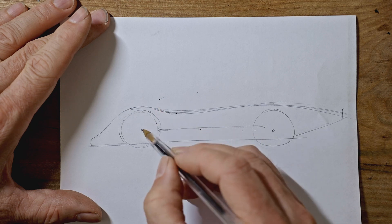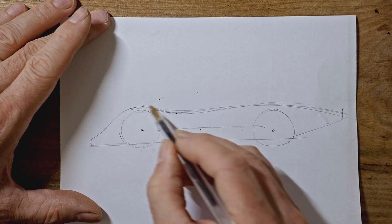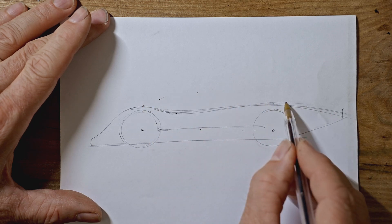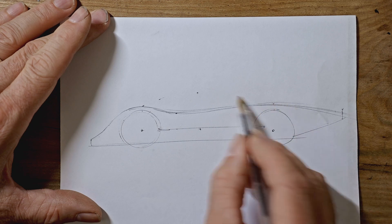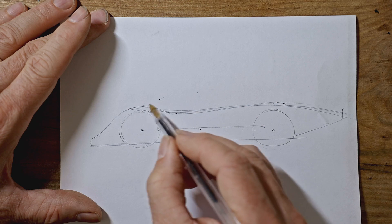And then the windscreen will start level with the middle of your front wheel, say here. And then it will come up to that point and then drop down. It'll blend into the tail around here somewhere. About the back edge of the back wheel.